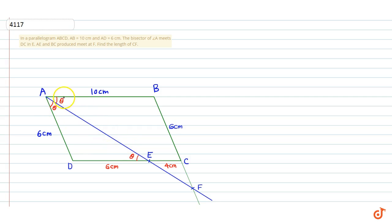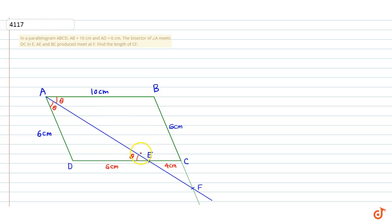Since AB and DC are parallel and AE is a transversal, the corresponding angles of a transversal are congruent. So angle BAE is equal to angle AED, and this angle is also equal to theta.